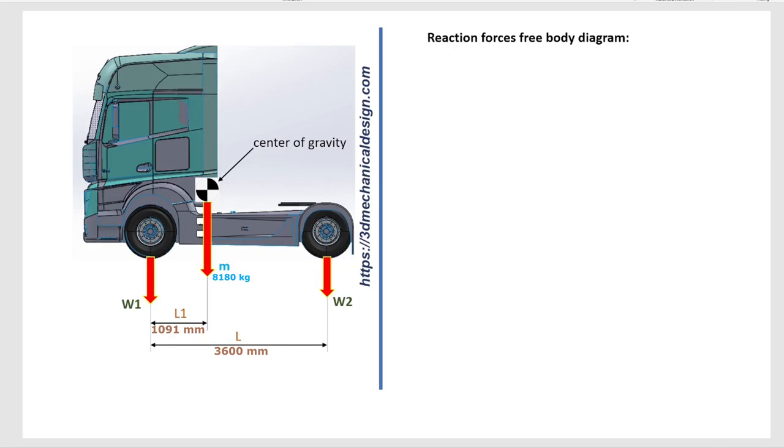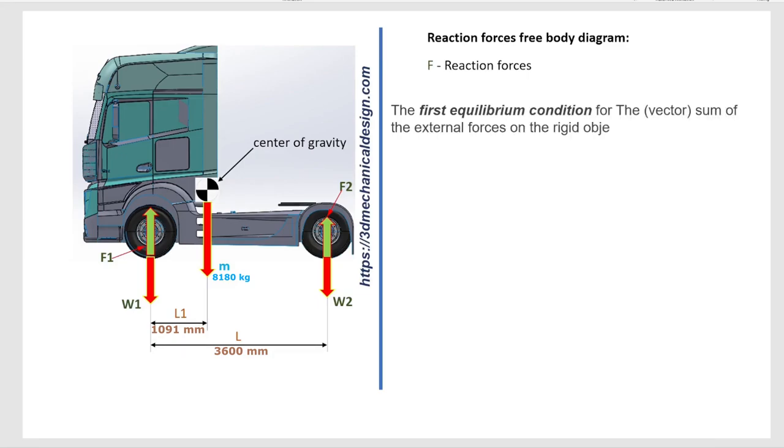Reaction forces free body diagram. The first equilibrium condition: the vector sum of the external forces on the rigid object must equal zero. The sum of F equals 0. F1 plus F2 minus Fm equals 0.